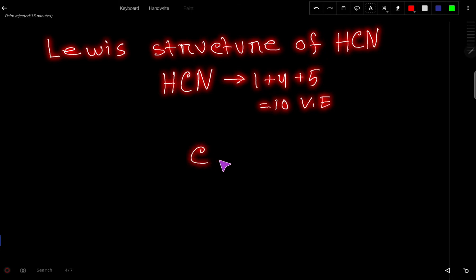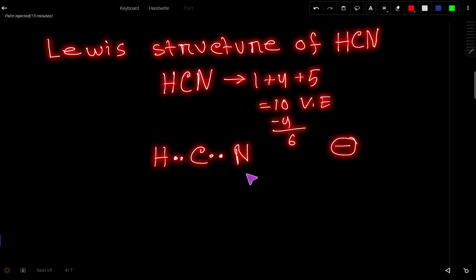So let us connect these three atoms together so that we can get the Lewis structure. To connect we need two dots or a single dash or bond. So for connecting, we have already used four valence electrons. So we have six valence electrons left.